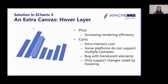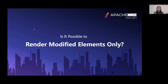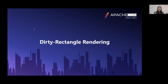Last but not least, since the hover layer is displayed on top of the main canvas, all elements rendered in the hover layer are on top of elements in the main canvas. So the hover layer solution can only be used to render elements at the top, which is exactly why it's called a hover layer. That being said, is it possible to render modified elements only? Yes, and this is why we introduced dirty rectangle rendering.